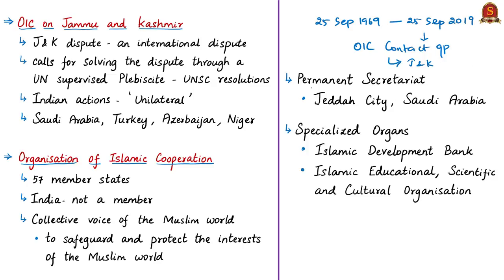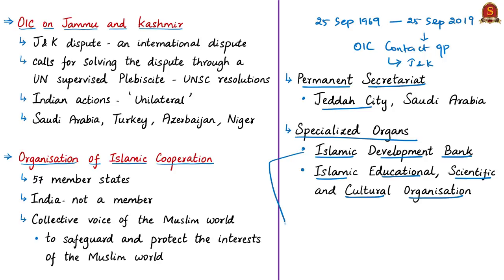The permanent secretariat of OIC is established in Jeddah, Saudi Arabia. The organization works on several areas including peace and security, Palestine, poverty alleviation, investment, finance and food security. Two specialized organs under OIC are the Islamic Development Bank and the Islamic Educational, Scientific and Cultural Organization. For the Islamic Development Bank, a country must be a member of OIC to join — hence only the 57 member countries are part of it.